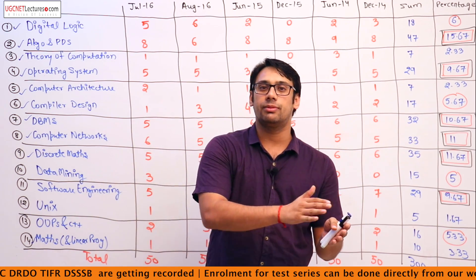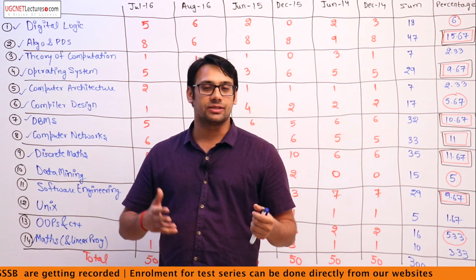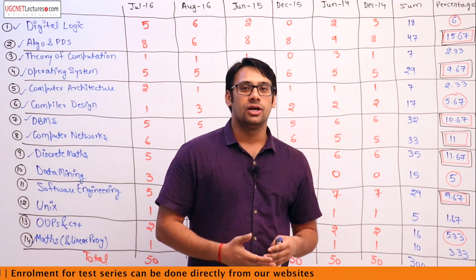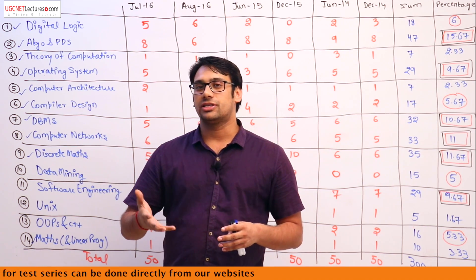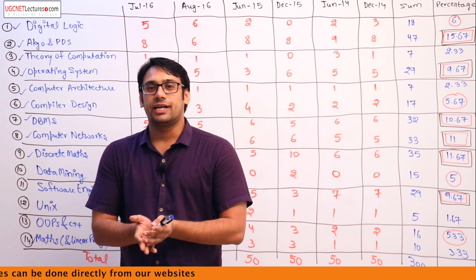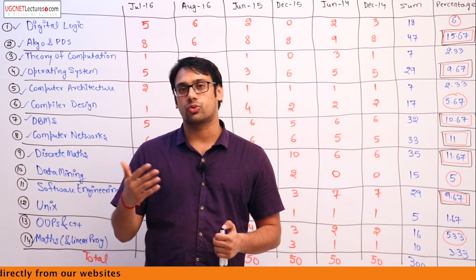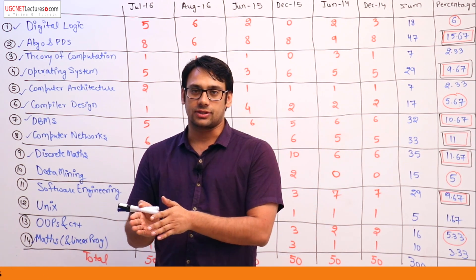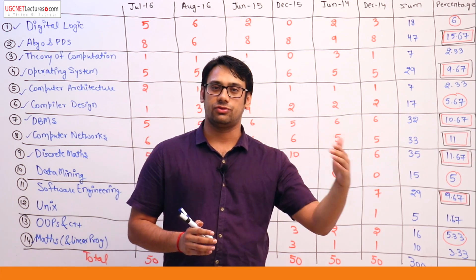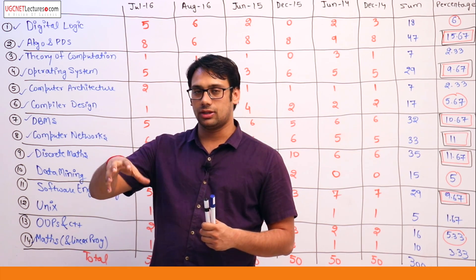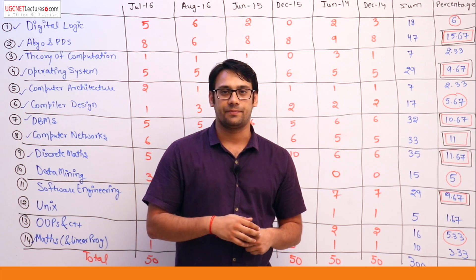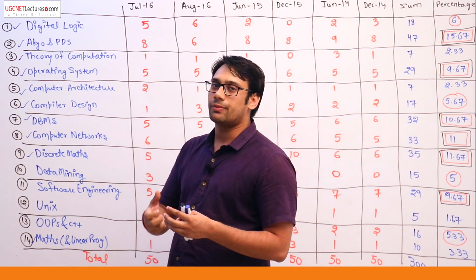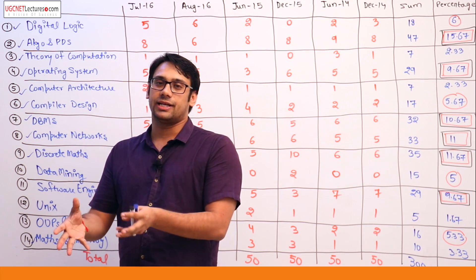To score bare minimum marks just to qualify is not enough — you need at least 40% in paper 1, paper 2, and paper 3 to qualify, but just qualifying will not solve your problem. After this you will have rankings, and according to the rankings you will get colleges. In the same way, scoring minimum marks for GATE is not enough either.